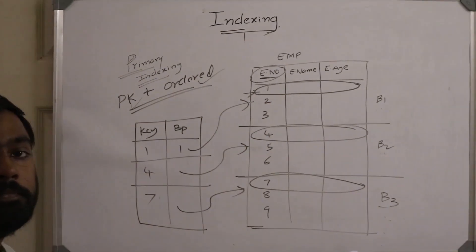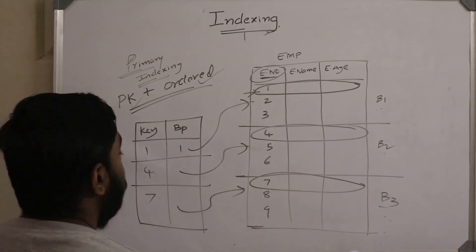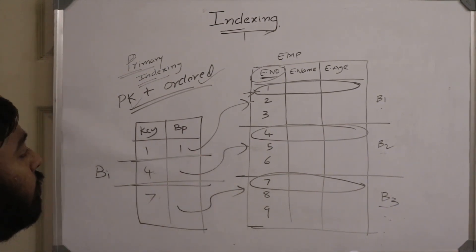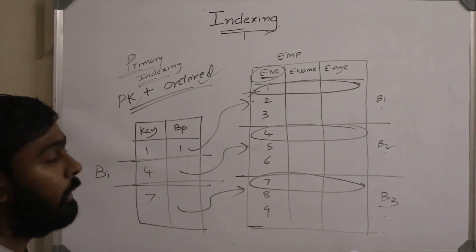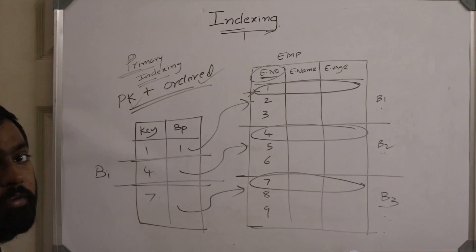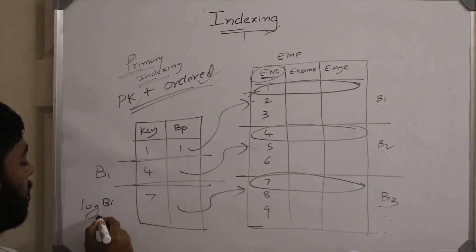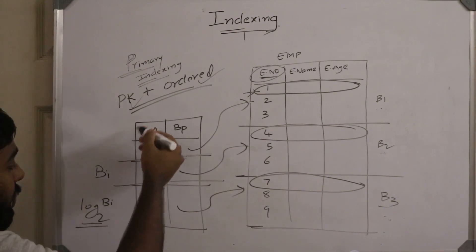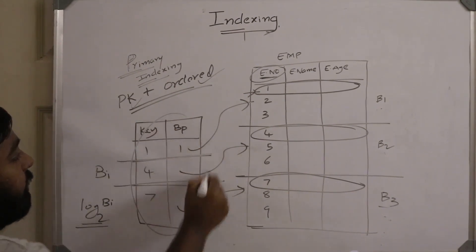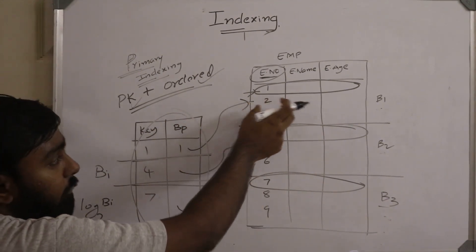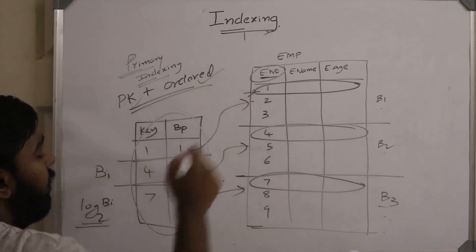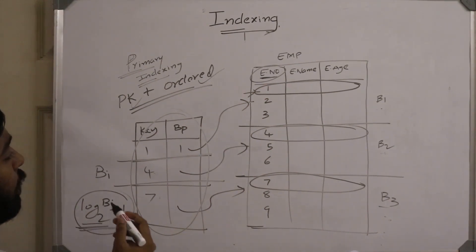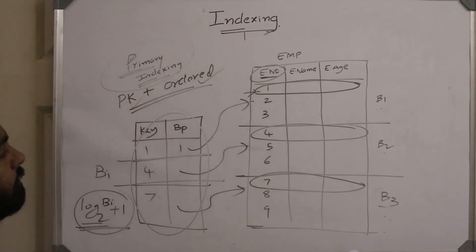Let's assume we have Bi number of blocks in the index file. Since the index is always ordered, the average number of block accesses to search the index will be log₂(Bi). But after locating the entry, we must go to the actual data block and access the record, which takes one more block access. So the total average number of block accesses in primary indexing is log₂(Bi) + 1.